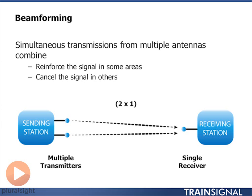Beamforming is available in the higher-end 802.11 Cisco products because it's fairly expensive. You will also see beamforming being used not only for N products, but Cisco also uses it for A and G. This is not in the standards, but it does improve the range that you can transmit to an A or G radio.